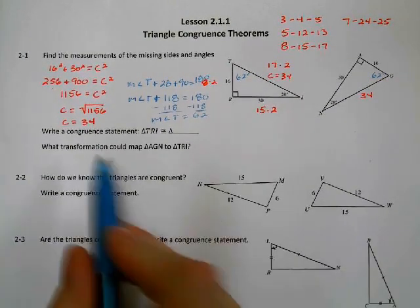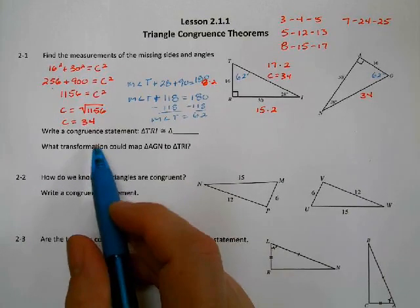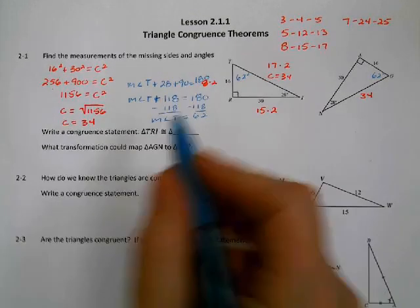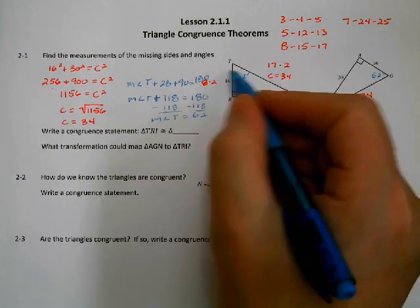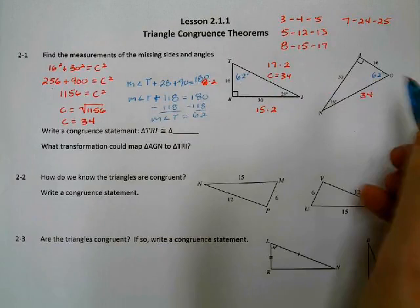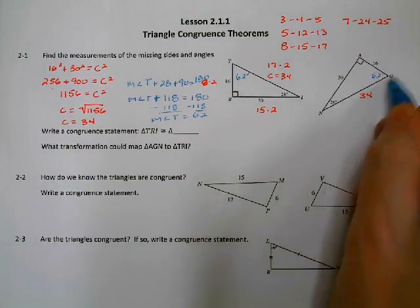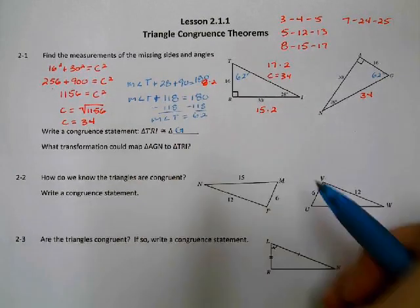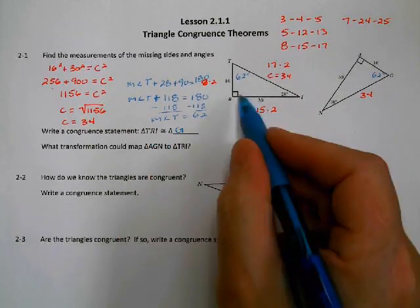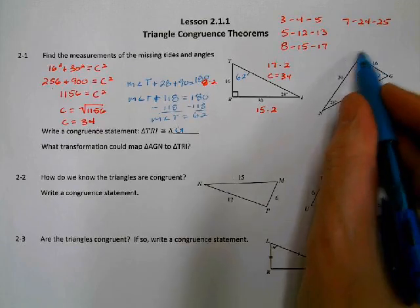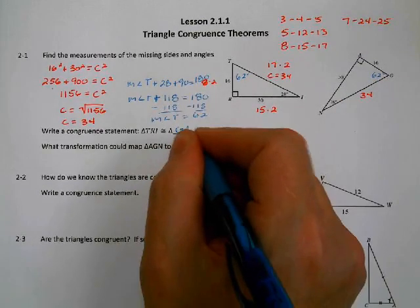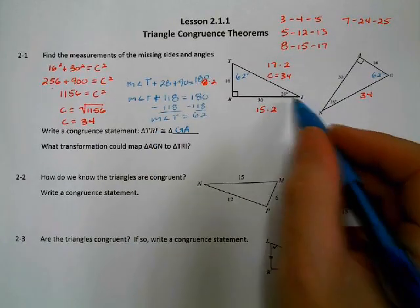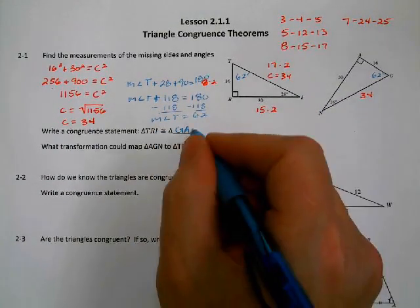We're supposed to write a congruent statement. In a congruent statement, the corresponding parts are written in order. This triangle starts with angle T, which is 62 degrees. Over on the other triangle, angle G is 62 degrees, so G goes first since T corresponds to G. R is the 90-degree angle, and A is the 90-degree angle, so A comes next. I is 28 degrees and N is 28 degrees. So the statement is triangle TRI is congruent to triangle GAN.